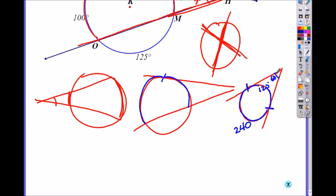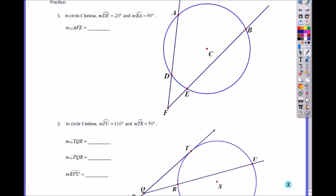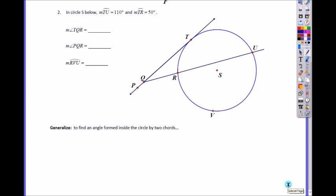So there are three different types of angles outside. It could be with two secants, one tangent one secant, or both tangents. So let's try an example. Here, let's do number two. In circle S below, measure of TU is 110 and RT is 50. Now find the measurement of angle TQR.